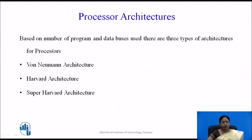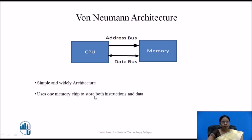Based on the number of program and data buses used, there are three types of processor architectures: Von Neumann, Harvard, and Super Harvard. In Von Neumann architecture, there is a single memory used to store both instructions and data. The CPU and memory interact via address and data buses. Because it uses a single memory chip, this is a simple and widely used architecture.